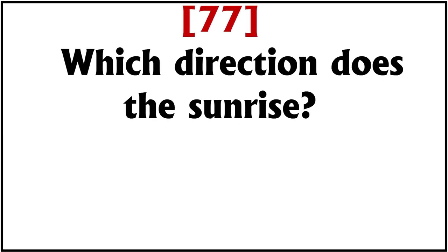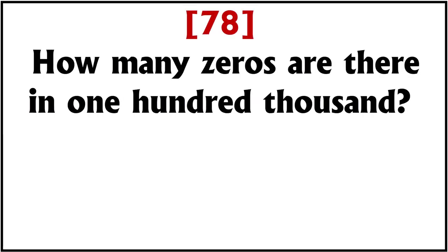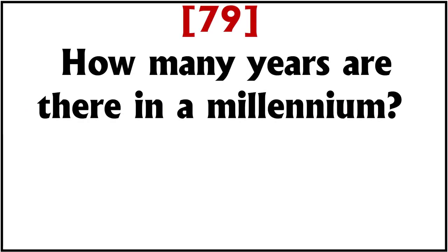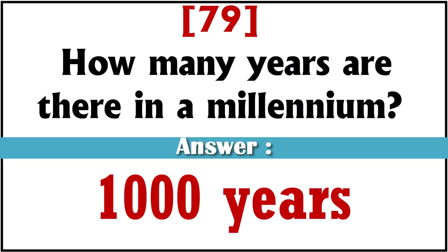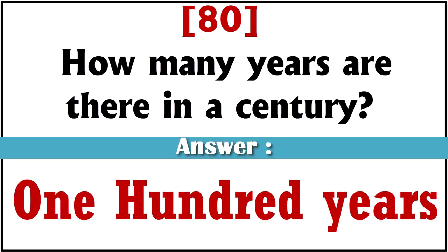Which direction does the sun rise? East. How many zeros are there in 100,000? Five zeros. How many years are there in a millennium? One thousand years. How many years are there in a century? One hundred years.